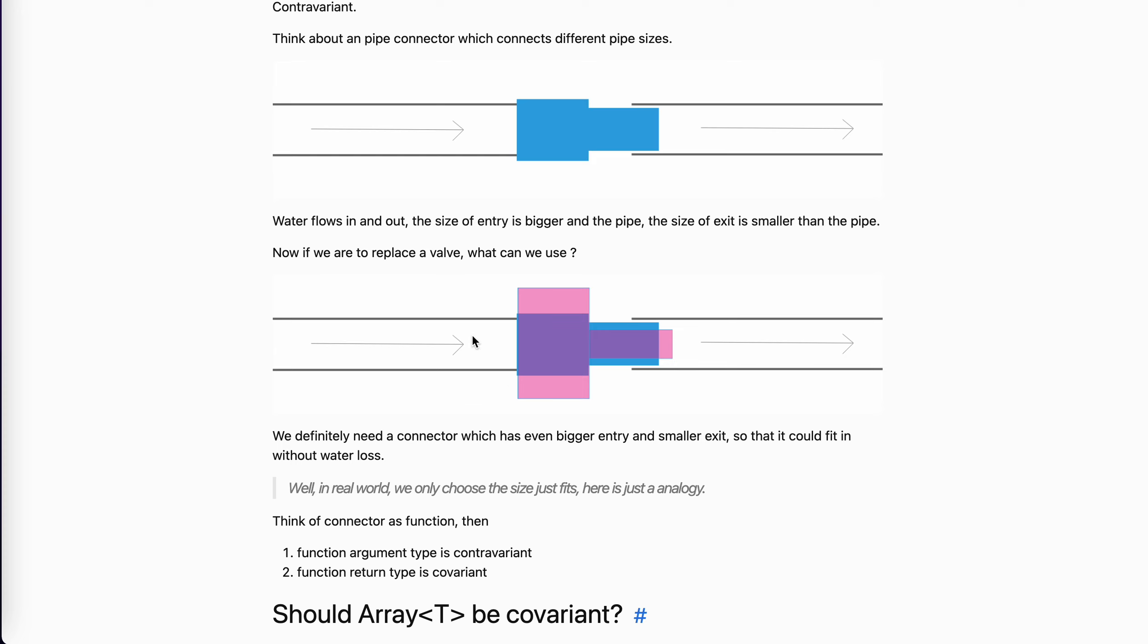So if you want to replace a connector, you need the entry to be bigger. If you like smaller here, there will be like a space for the water to flow out. And also for the exit, you need to be smaller rather than bigger. If you're bigger, there will also be some space for the water to flow out, right? Because the pipe is not covered. So yeah, that's why you see.